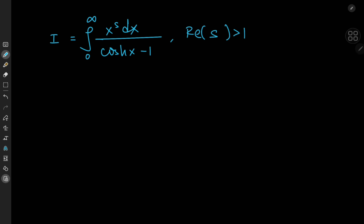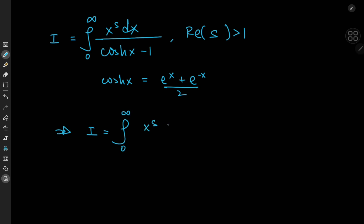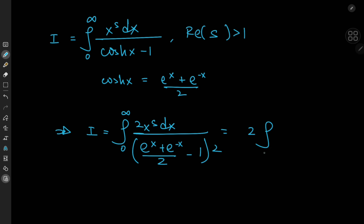So how exactly do we approach this integral? Well, we have the hyperbolic cosine in the denominator, so we could expand it using the definition by recalling that cosh(x) equals e to the x plus e to the negative x, divided by 2. This means that I can be written as the integral from 0 to infinity of x to the s dx divided by (e^x + e^(-x))/2 minus 1. Expanding by a factor of 2, we get twice the integral from 0 to infinity of x to the s dx divided by e^x + e^(-x) minus 2.